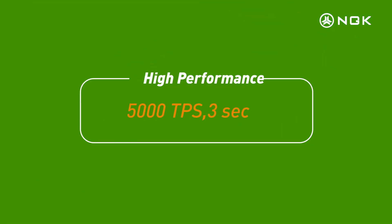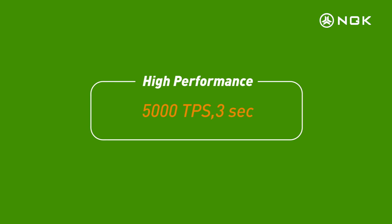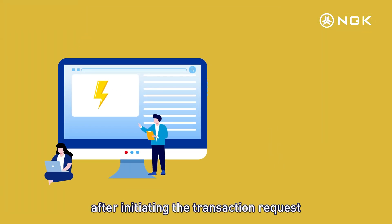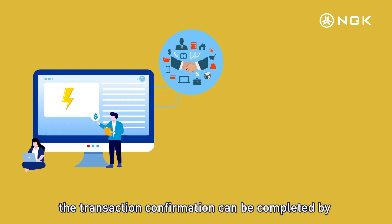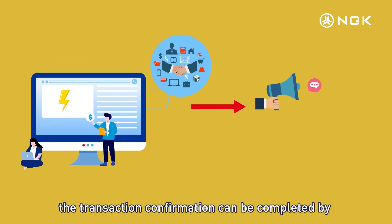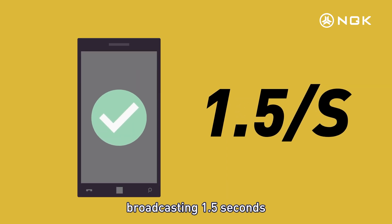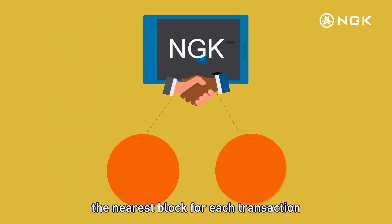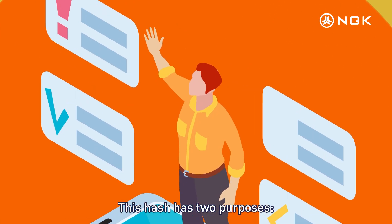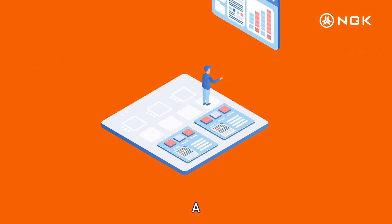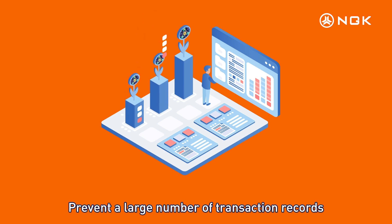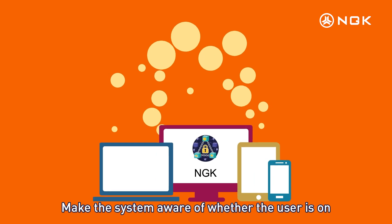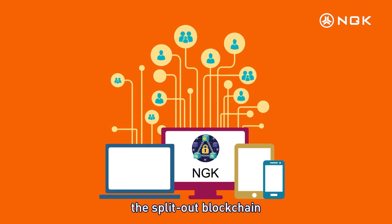High Performance: 5000 TPS, 3-second block time. Lightning Trading Speed — after initiating the transaction request, transaction confirmation can be completed by broadcasting in 1.5 seconds. The NGK system contains the hash value of the nearest block for each transaction. This hash has two purposes: A. Prevent a large number of transaction records on the bifurcation blockchain. B. Make the system aware of whether the user is on the split-out blockchain.